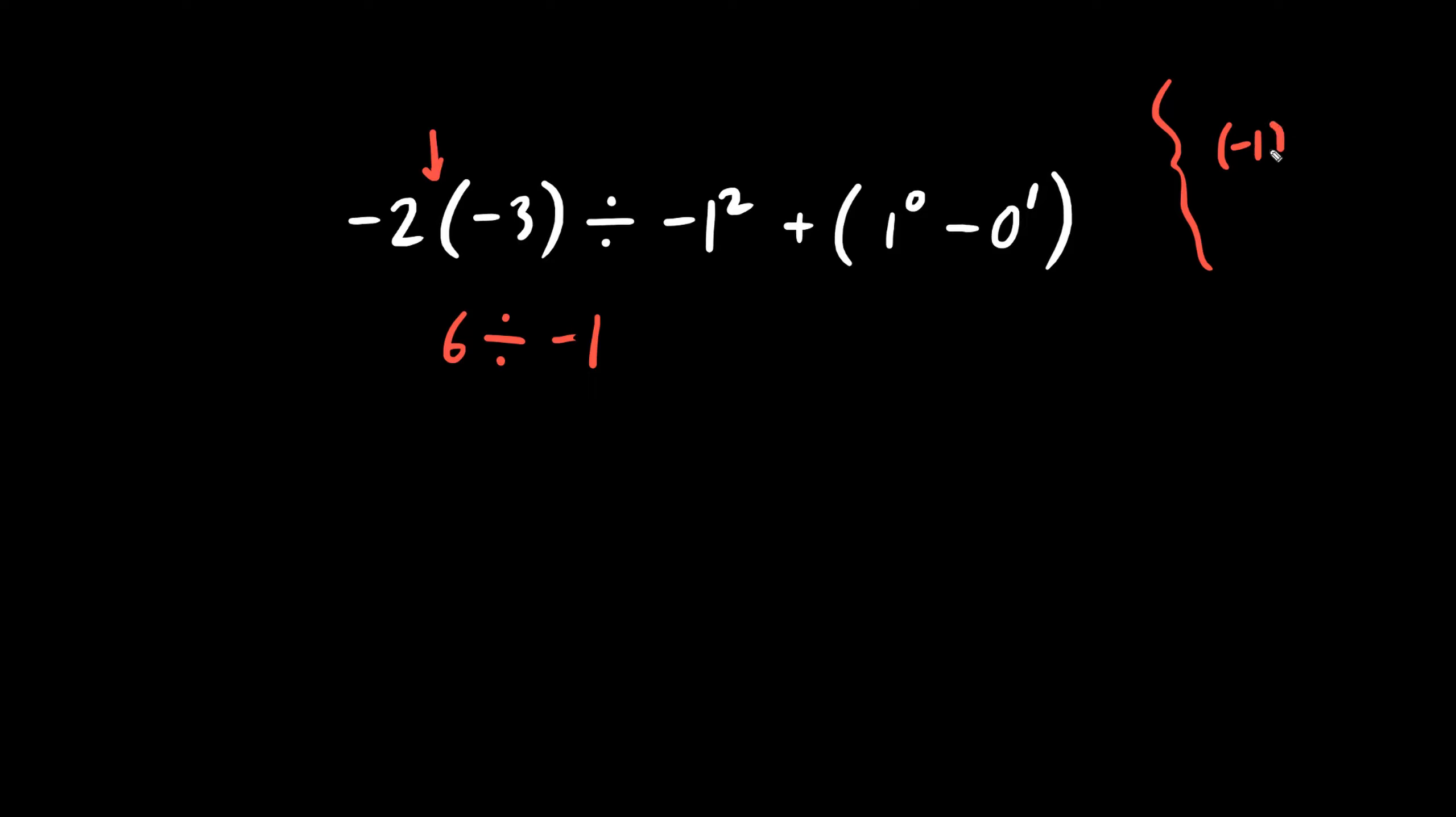Recall that negative one squared indeed is positive. However, negative one squared is a negative number. And we're just evaluating the value. One squared is one. Okay, now we have a plus sign and a bracket. What's inside the bracket? One to the zero is one. Anything to the zero usually is one. Minus zero to the anything is zero. What is one minus zero? The answer here inside the brackets is one.